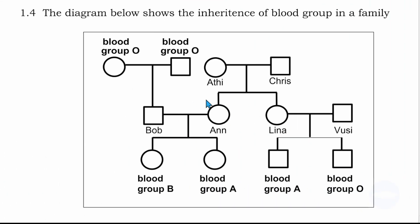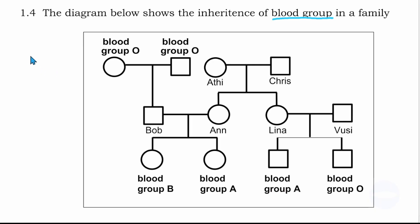Before I answer the questions, I like to analyze the diagram. Here it's 1.4. The diagram shows the inheritance of blood group in a family. So here we're talking about blood groups. Blood group alleles are standardized, so we need to know the alleles by heart.